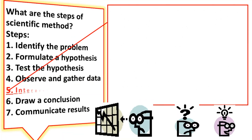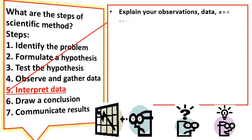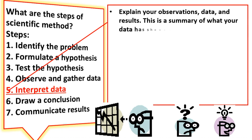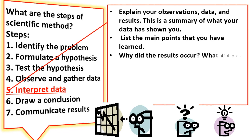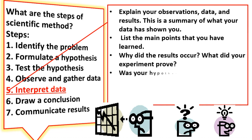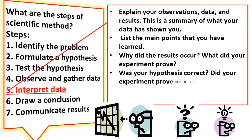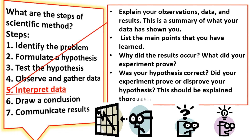Step 5: Interpret data. Explain your observations, data, and results. This is a summary of what your data has shown you. List the main points that you have learned. Why did the results occur? What did your experiment prove? Was your hypothesis correct? Did your experiment prove or disprove your hypothesis? This should be explained thoroughly.